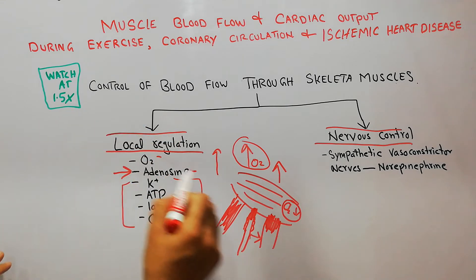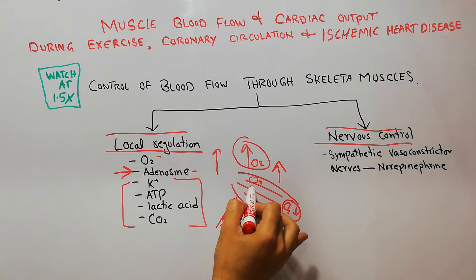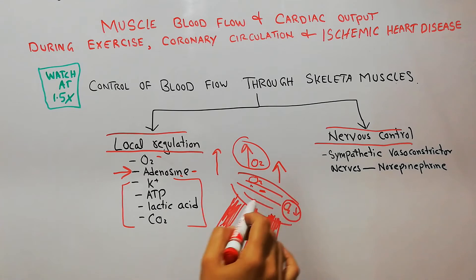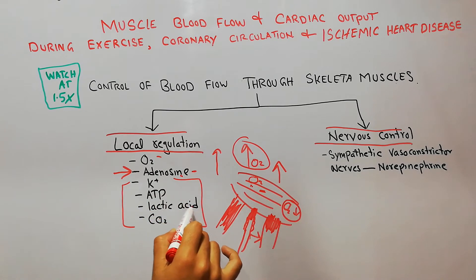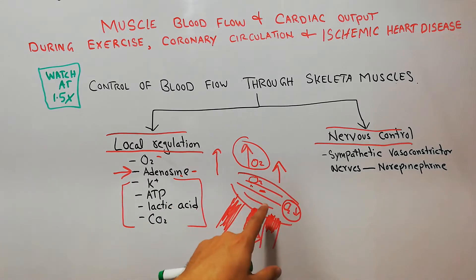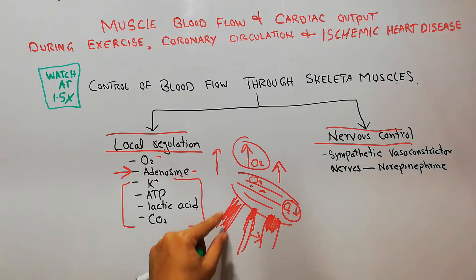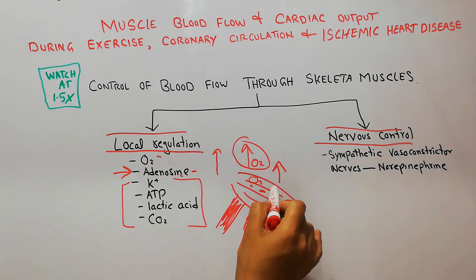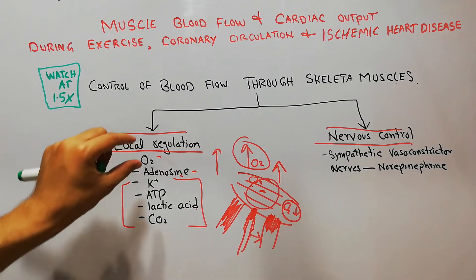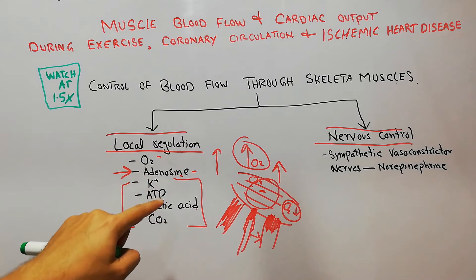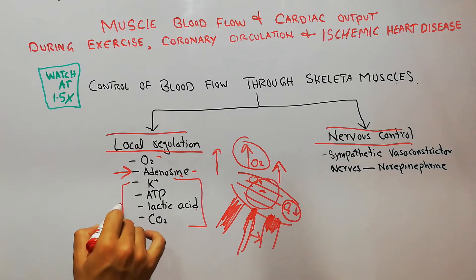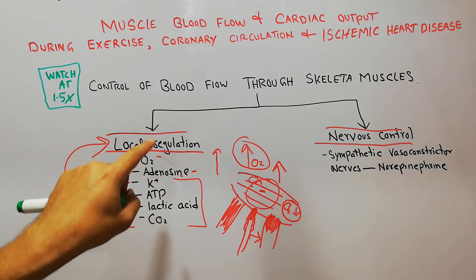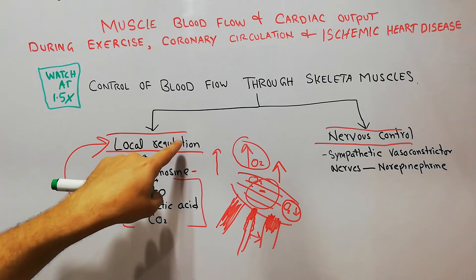The decrease in oxygen, the secretion of adenosine, the secretion of extra potassium ions, the formation of ATP, lactic acid, and carbon dioxide — all these changes are occurring locally in the muscle and are causing vasodilation, driving more blood towards the muscle. So oxygen, adenosine, potassium, ATP, lactic acid, and carbon dioxide are all considered local factors that play their role in the local regulation of blood flow.